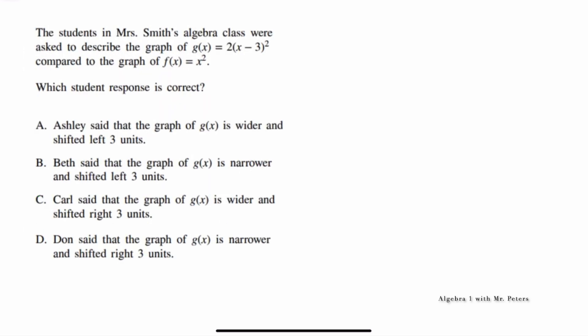We're dealing with transformations of functions and they want us to pick the correct response. They give us the parent function f of x equals x squared and they gave us g of x equals 2 times x minus 3 squared. So we're talking about transformations of parabolas. If you remember my older videos, I always tell you guys that if the transformation is inside the parentheses like what we have on this problem, it's going to be a shift to the left or the right. Now specifically with this problem, x minus 3, we're going to have a shift to the right. So A and B, we could eliminate those answer choices.